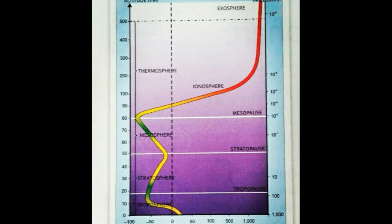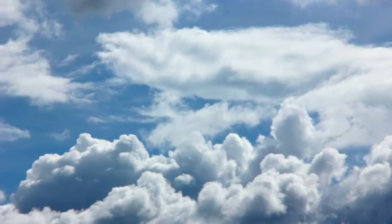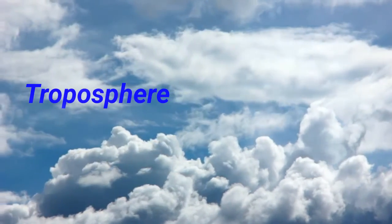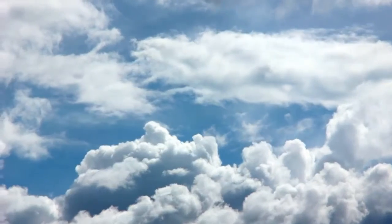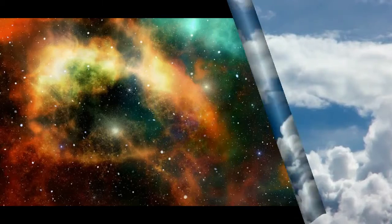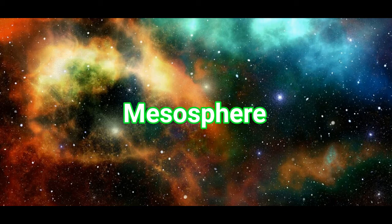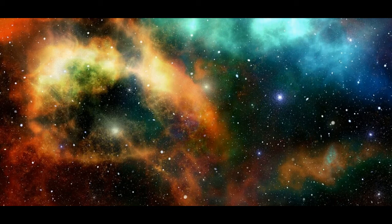Now I will show you some clips regarding the troposphere, mesosphere, and thermosphere. This is the troposphere, where weather phenomena occur in this layer of the atmosphere. The meteors burn up in the mesosphere and appear as bright streaks of light in the night sky. The mesosphere lies above the stratosphere, and what you have to remember is that it is the coldest layer.